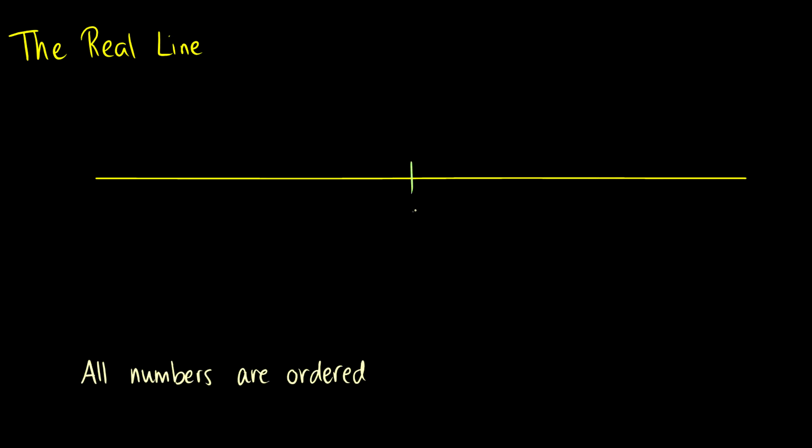And what we say is because we have this line here is that it's going to be an ordered line. So numbers are ordered from smallest to largest.